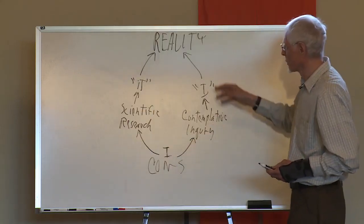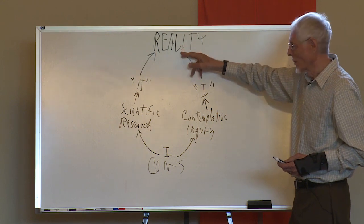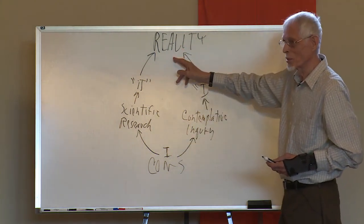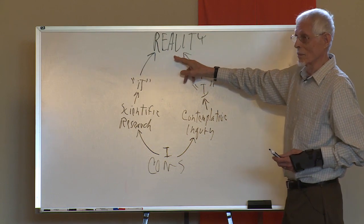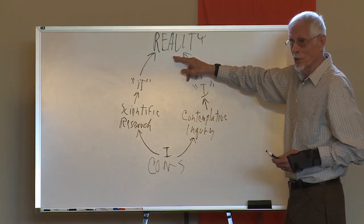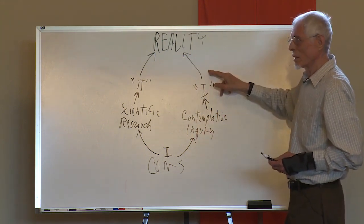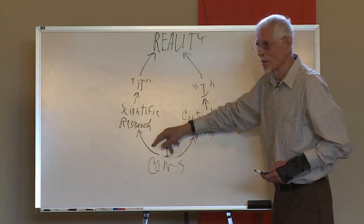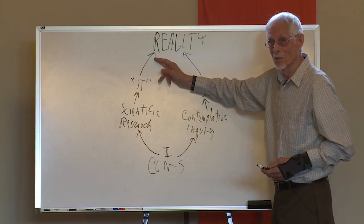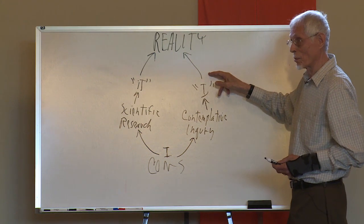This contemplative inquiry is an approach to truth about reality, and this scientific research is an approach to truth about reality. And it's the same reality that's being approached. But contemplative inquiry can't see the scientific research approach, and the scientific research can't see the contemplative inquiry approach, because it's only dealing with its.